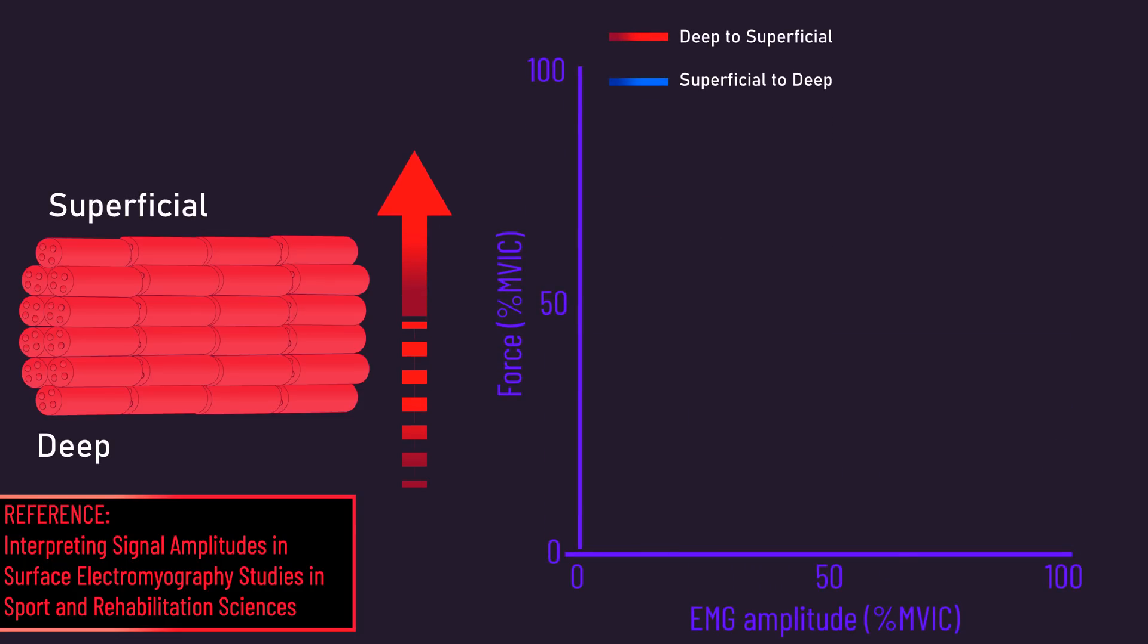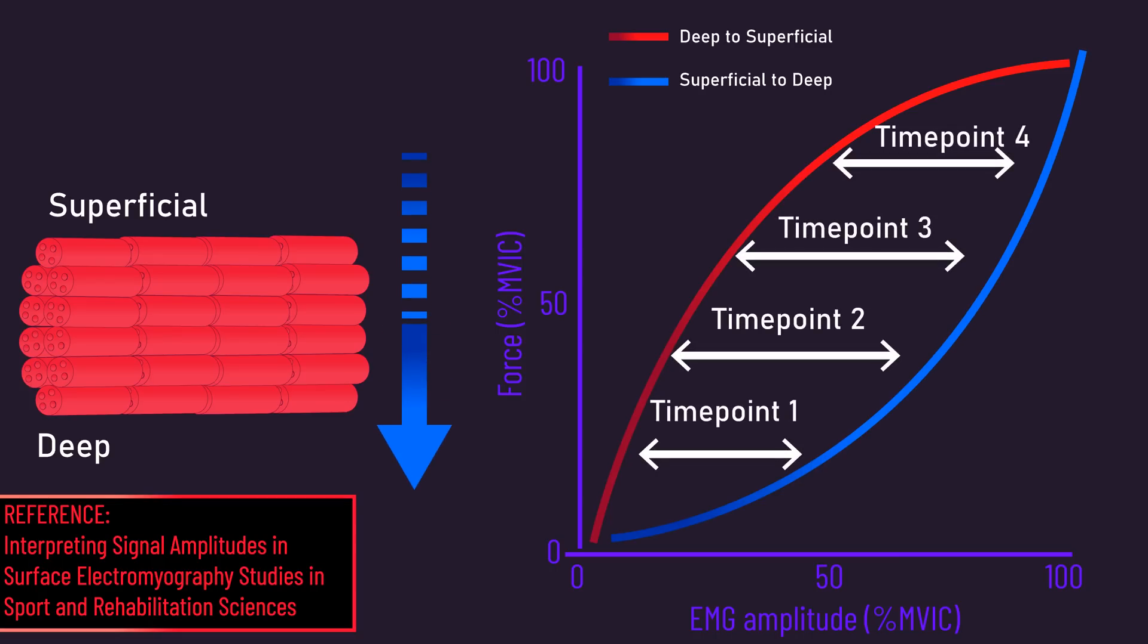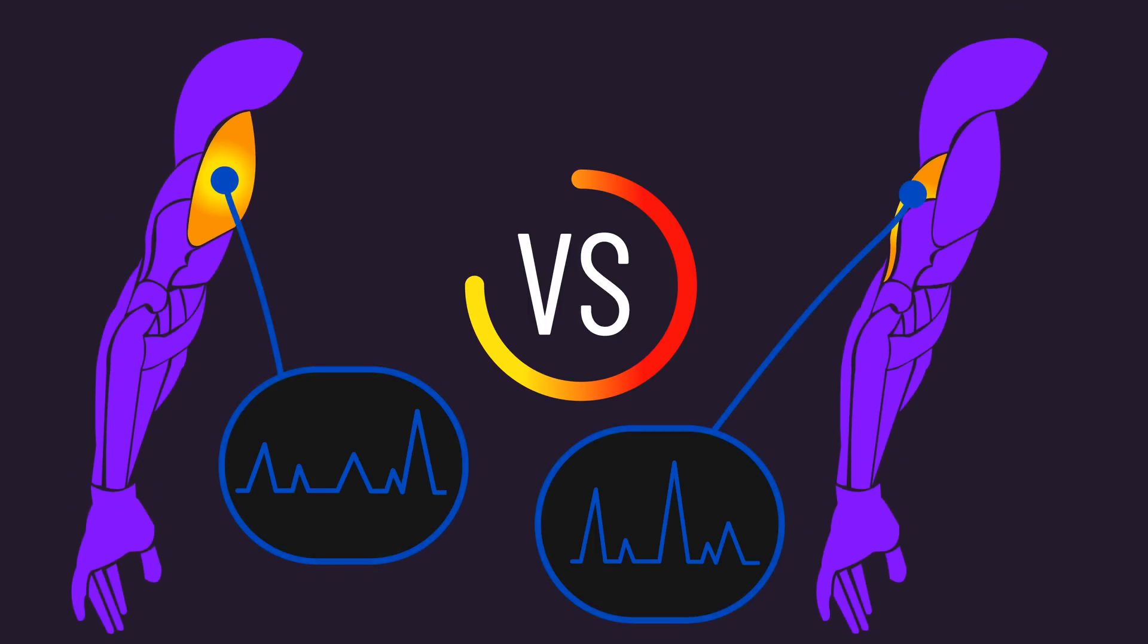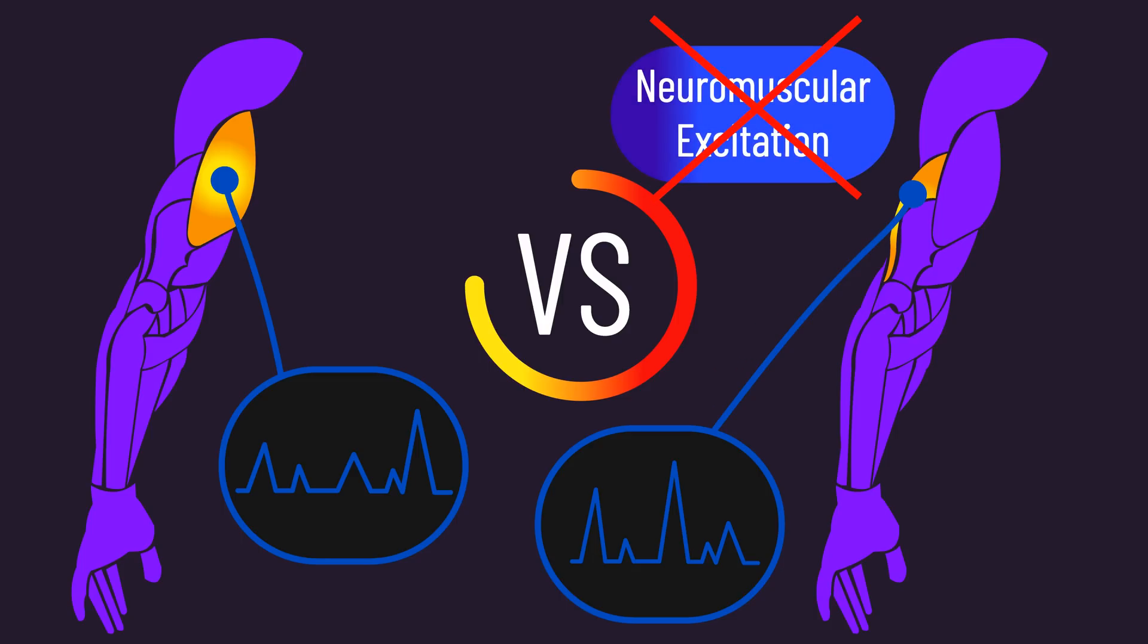These muscle fibers are layered, and even if actual neuromuscular excitation is kept the same, a muscle that recruits fibers from the deep to superficial level would produce different EMG recordings to a muscle that recruits fibers from the superficial to deep level. This is notable because if during an exercise we see higher EMG recordings with one muscle versus another muscle, that muscle may not be truly experiencing greater neuromuscular excitation.